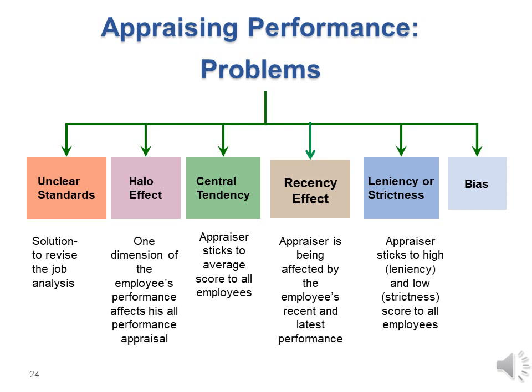While appraising employee performance, there are many problems an appraiser may fall into: unclear standards; the halo effect, where one dimension of performance affects the appraiser's view of overall performance; central tendency, where the appraiser assigns average scores to all employees; leniency or strictness error — leniency when sticking to high scores, strictness when sticking to low scores; recency effect, when the appraiser is affected by recent behaviors; and bias.